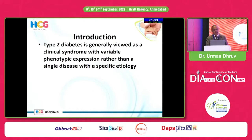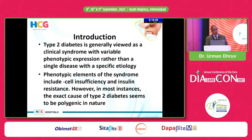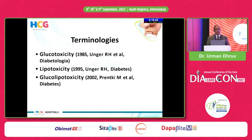We all know type 2 diabetes is generally viewed as a clinical syndrome with variable phenotype. However, it could be polygenic in nature, and this polygenicity — multiple factors involved in the pathogenicity — can also be discussed in the form of glucotoxicity. The term glucotoxicity was coined in 1985, lipotoxicity in 1995, and glucolipotoxicity was coined in 2004.